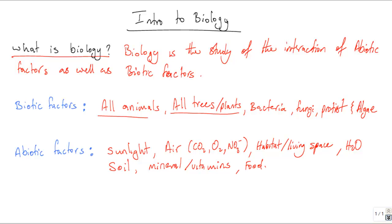So basically, in a nutshell, biology is the study of the interaction of abiotic factors, which are non-living, and biotic factors, which are living. As you can see, a list of the biotic factors — everything that is living, all living organisms — from trees, plants, bacteria, fungus, protists, algae, and non-living factors which include sunlight, air, habitat or living space, water, soil, minerals, and vitamins.